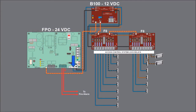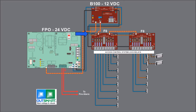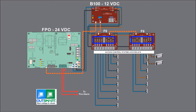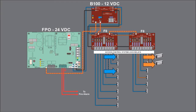Connect DC1 of the FPO to DCIN of the B100. Connect B1 of the F8 daisy chain to the second DCIN terminal of the B100. Connect B2 of the F8 daisy chain to DC out of the B100. On the F8, program the lock outputs to 12 volts or 24 volts as necessary and the locks to drop out on fire alarm. Each lock now has a fuse in series with it, can be controlled by the access system door relays, and the egress locks will drop out when the fire alarm is activated.